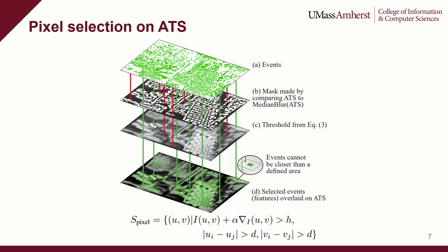Based on the adaptive time surface, we develop a corresponding pixel selection algorithm that applies a mask and a threshold filter to obtain sparsely selected pixels.